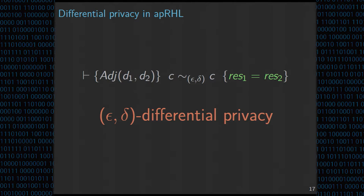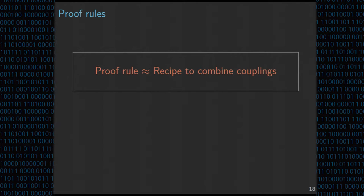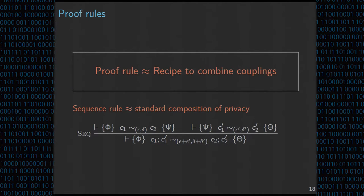Each proof rule in this logic corresponds to a recipe to combine couplings. Given couplings for sub-parts of a program, each proof rule gives a way to combine them into a larger coupling. For instance, the sequential composition rule corresponds to the standard composition principle in privacy. In the first premise we have an epsilon-delta approximate coupling, in the second an epsilon-prime delta-prime approximate coupling, and in the conclusion we sum up the epsilons and deltas — morally representing the sequential composition theorem of privacy.